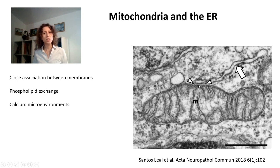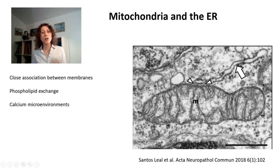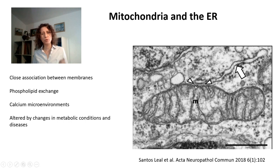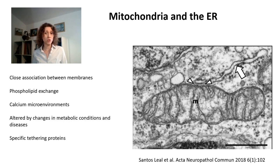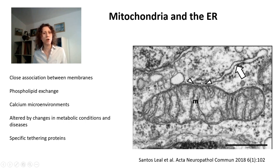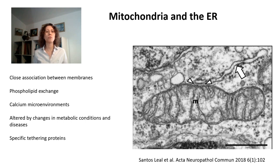There's also an exchange of calcium signaling between the ER and mitochondria. Calcium in the ER can be released and taken up by mitochondria, and mitochondria can also determine how much calcium is inside the ER — so it goes both ways. This physical and functional relationship between the ER and mitochondria is altered in many metabolic and disease conditions. Interestingly, proteins involved in mitochondrial dynamics and fusion are also involved in tethering with the ER, so bringing membranes together — mitochondria to mitochondria and mitochondria to the ER — involves some similar proteins.